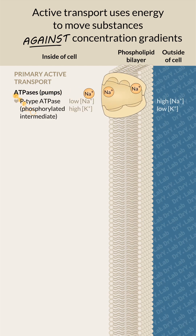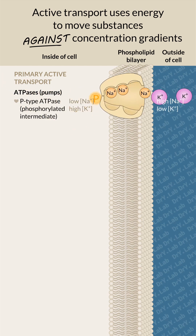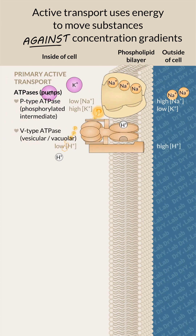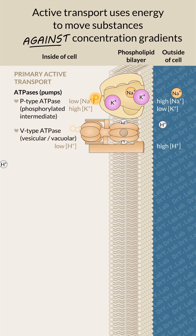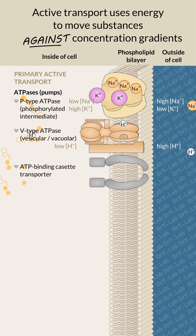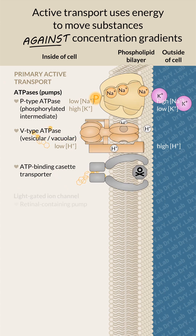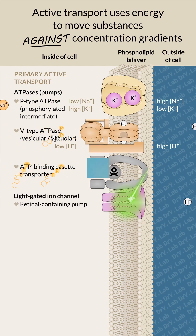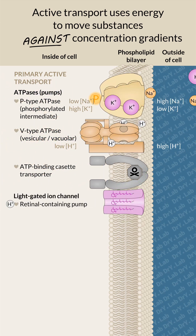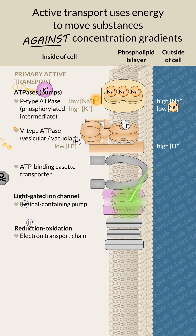The P-type ATPase receives a phosphate group from ATP. The V-type ATPase rotates like a motor. The ATP binding cassette transporter binds to ATP. The light-gated ion channel contains a pigment to absorb light for driving the motion of the pump.